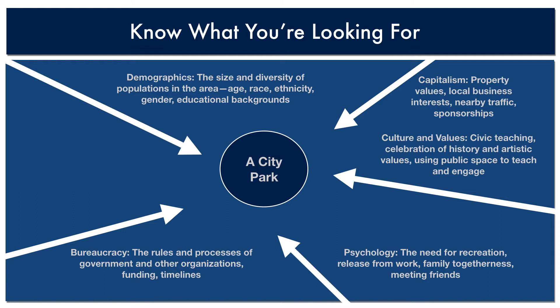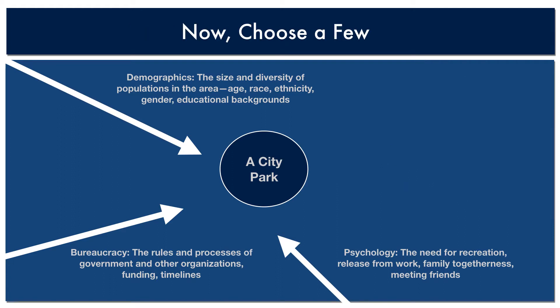Once you identify these variables, you can start to look for information about them — either observations about particular people doing particular things at particular times, or more general information that tracks how these things work, not just in one place, but in a variety of places. To describe a complex process, just pick three of these variables, processes, or vectors — pick the ones where you can gather lots of information, where you can track the process.